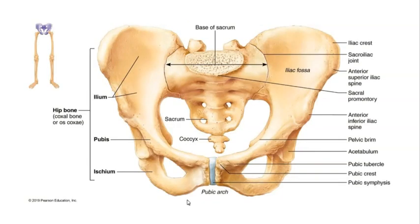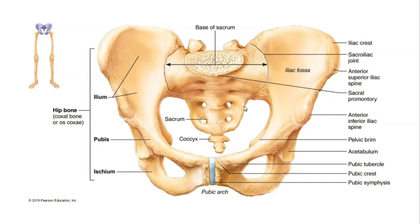Turning our attention to the pubis, it forms the anterior and inferior aspect of the hip bones. When we are standing in anatomical position, the pubis is nearly horizontal and the urinary bladder rests on its superior surface. The anterior aspect of the pubis is thickened and referred to as the pubic crest. The right and left pubic bones are joined at the midline by a fibrocartilage joint called the pubic symphysis, a flexible joint that allows for expansion of the hip bones on the anterior side, which is particularly useful during childbirth so that the baby's head can pass through the opening in the bottom of the pelvis.